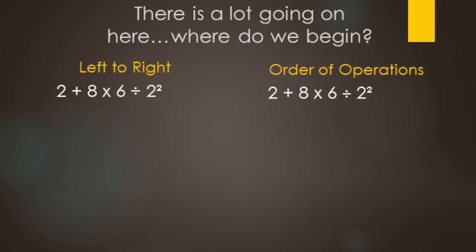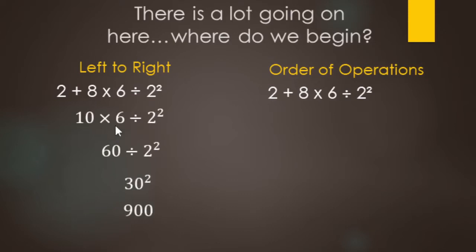Here's a quick illustration of why we use order of operations. Let's look at this numerical expression — both sides are the same. Working left to right: two plus eight makes 10, then 10 times six makes 60, then 60 divided by two makes 30, and then 30 squared makes 900. So this left-to-right approach is the wrong way of doing it. Do not do it this way — we're going to be using order of operations.